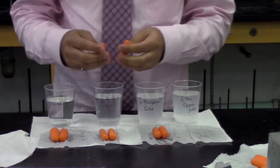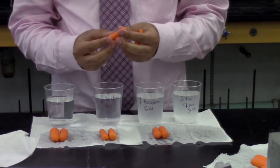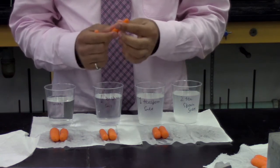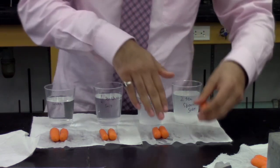Finally, let's look at the carrot from the fourth cup which had two teaspoons of salt. This carrot is even more squished and more shrunken than the one in the third cup.